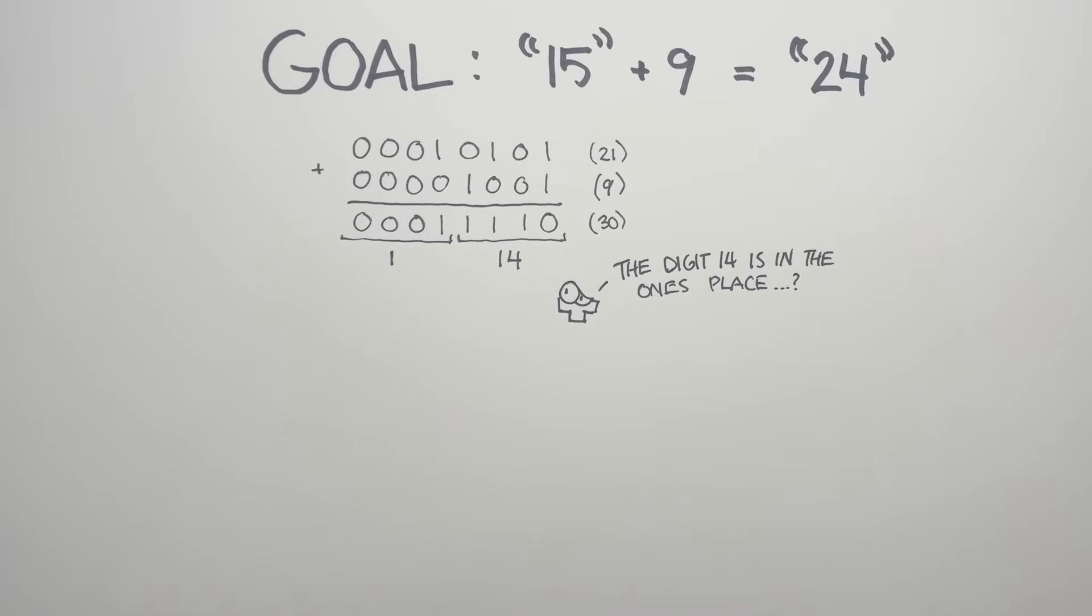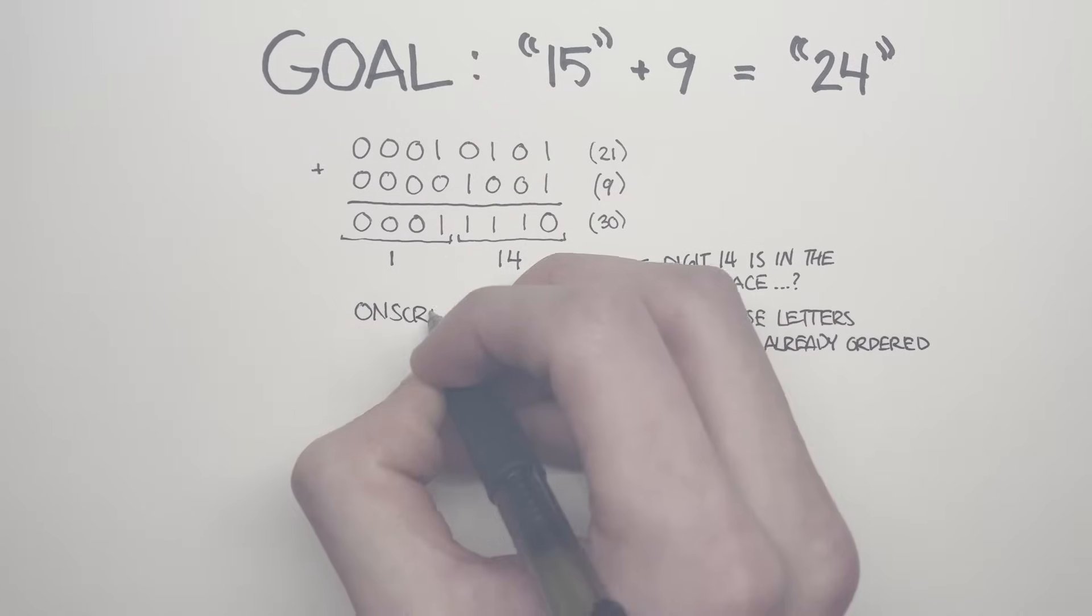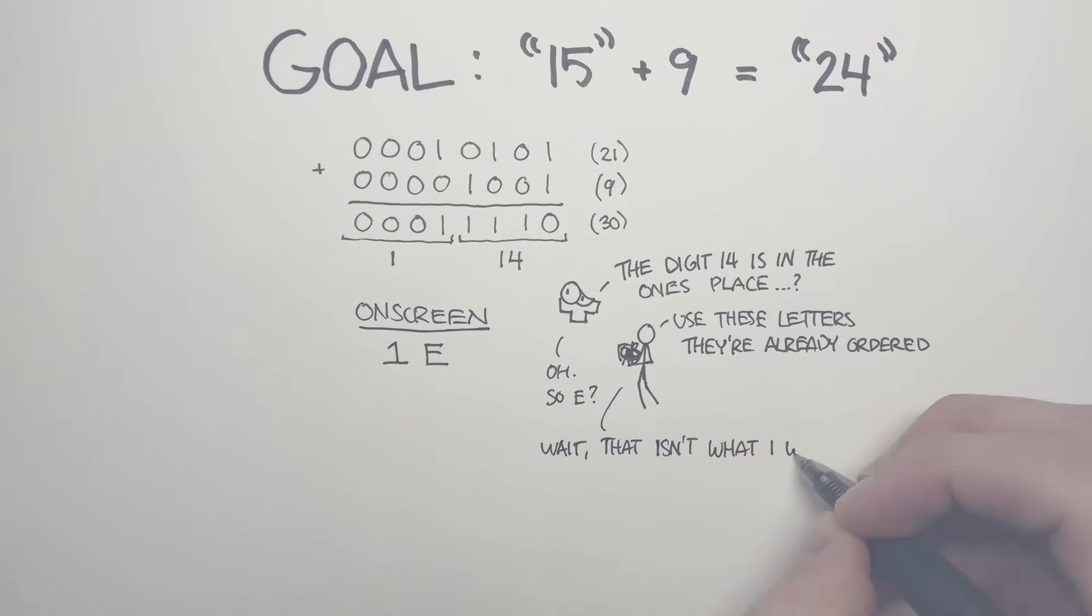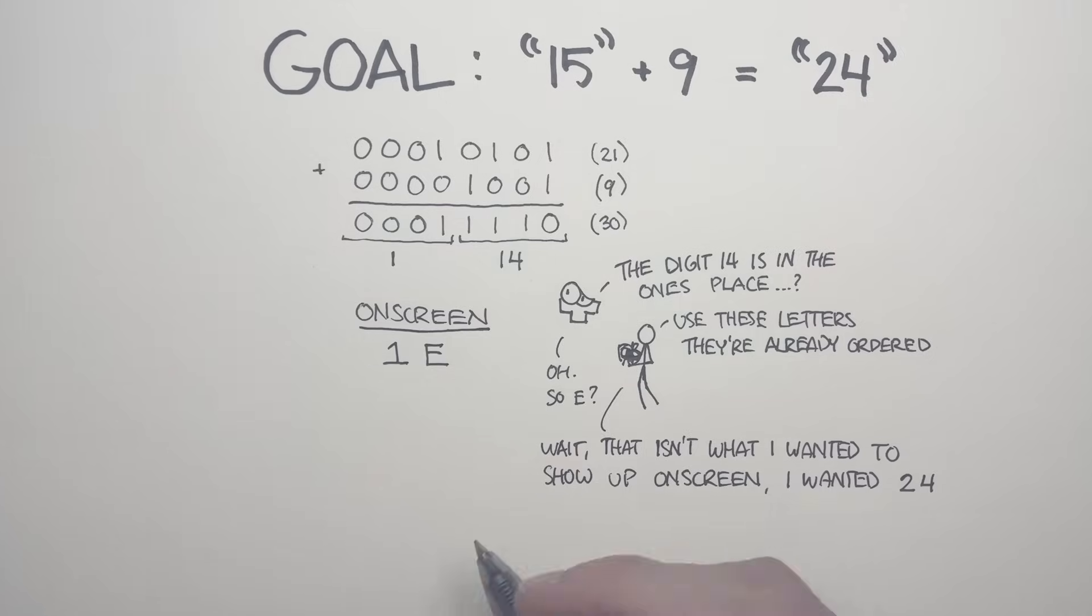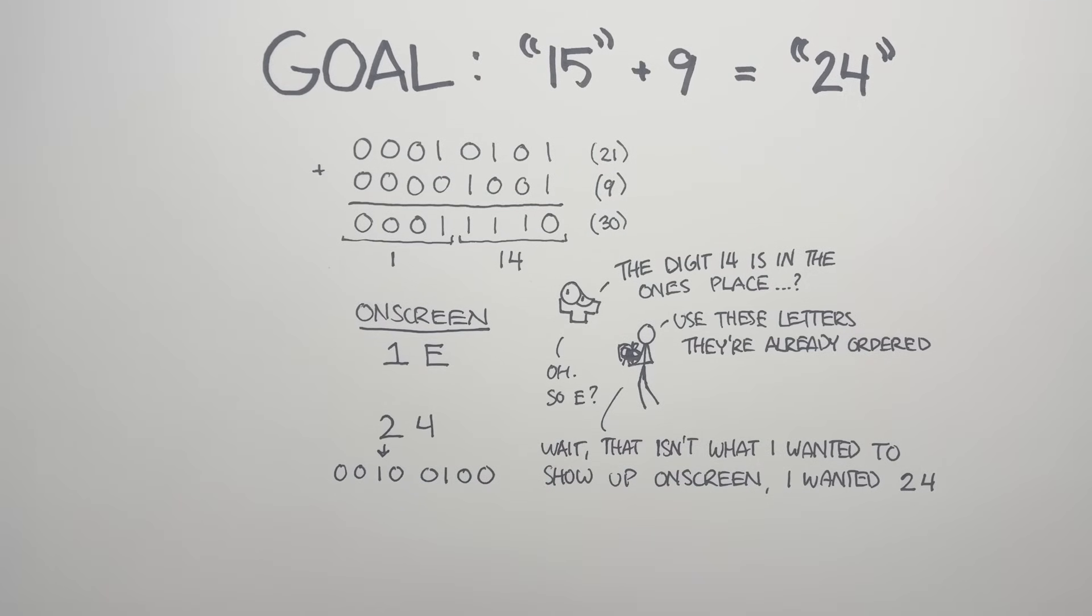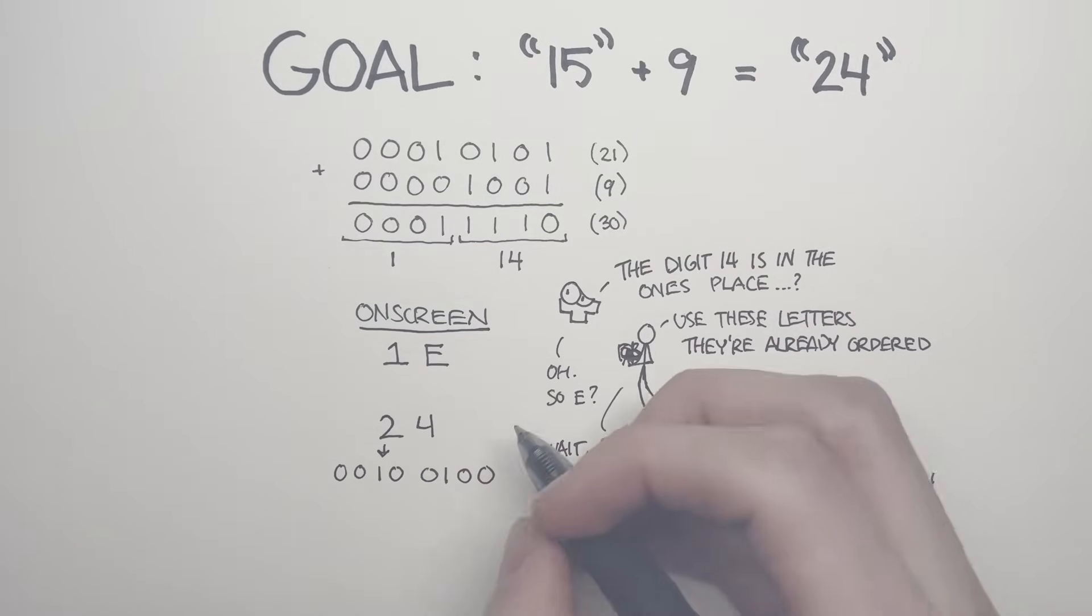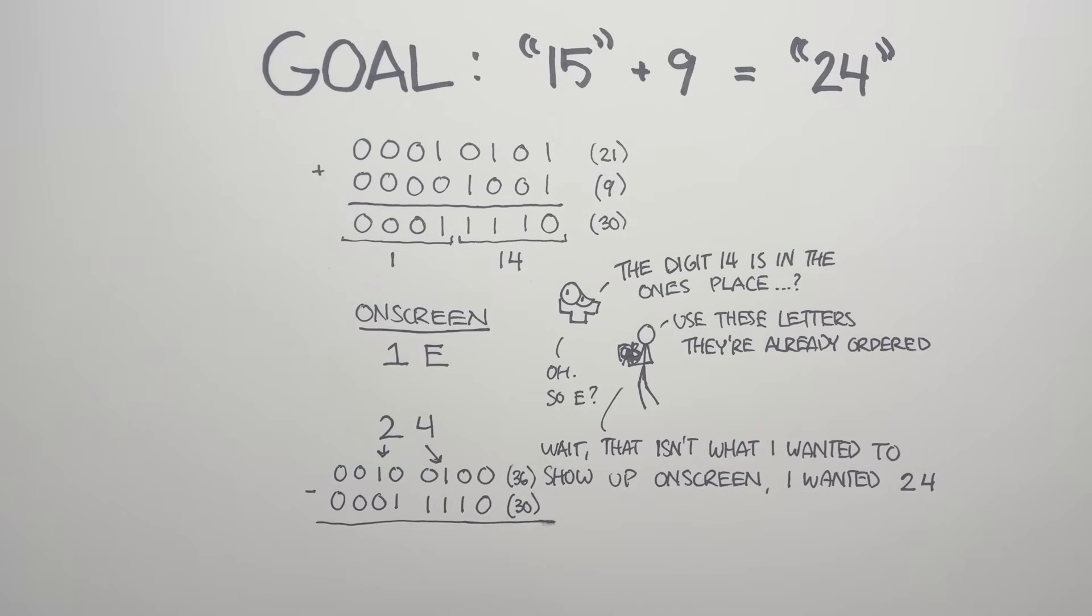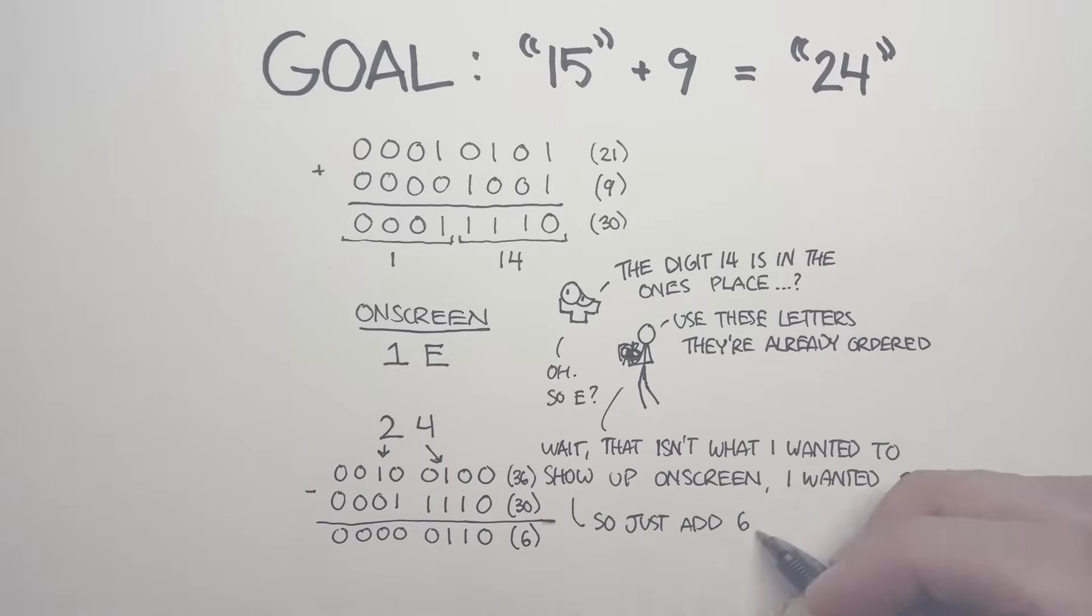So as a matter of convention, if a digit has a value greater than 9, then we assign them the letters of the alphabet in order. So 10 is A, 11 is B, 14 would be E. So when we do this on screen, we see the number 1E. That is not the 24 we wanted. So what's the solution? Well, the number we want to actually have in memory is 0010 0100, which would split up to the digits 2 and 4. Adding up that number in binary, we get the number 36. Our previous result was 30, so the correct thing to do in this situation is add 6. This will get us from the number 1E to the number 24.